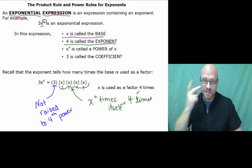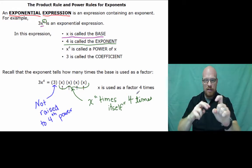Now we can see that we have x to the fourth power, which means x times x times x times x. That's four times.